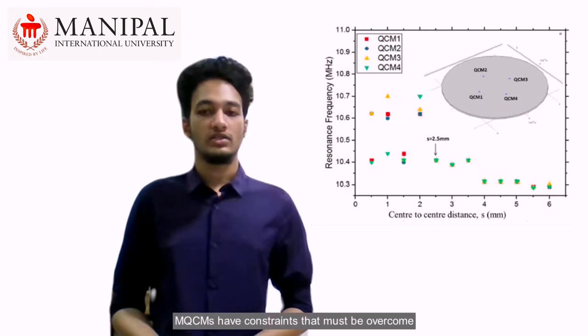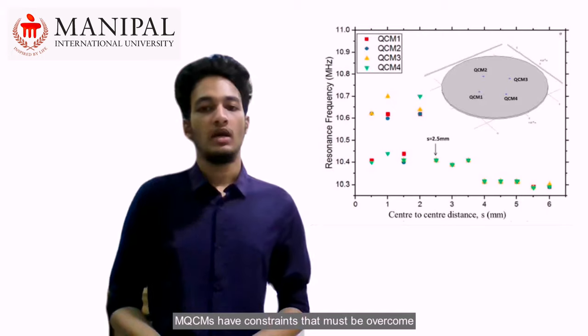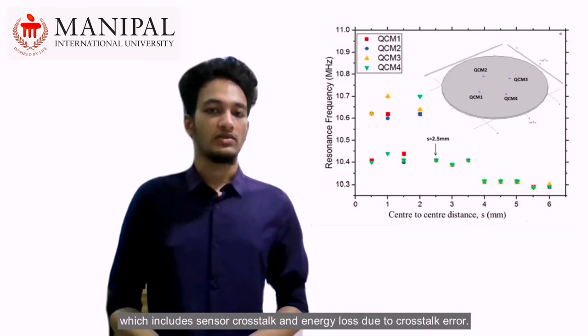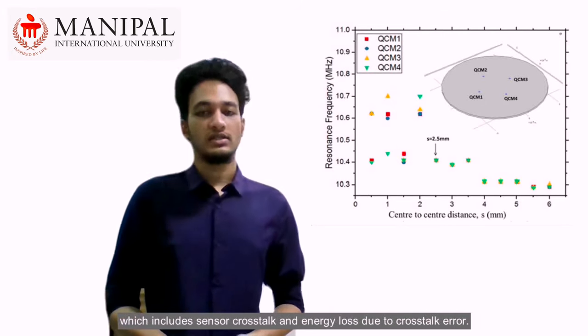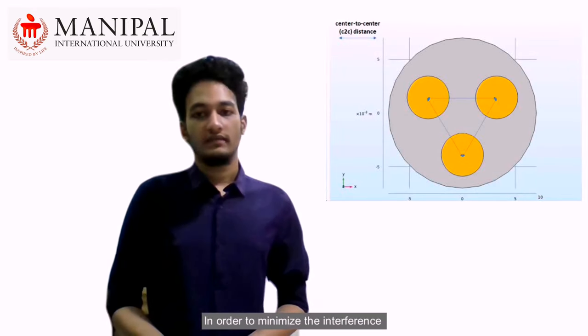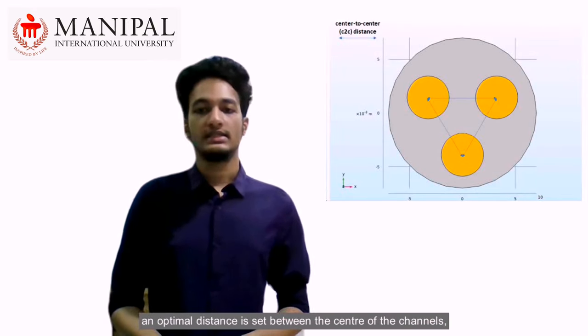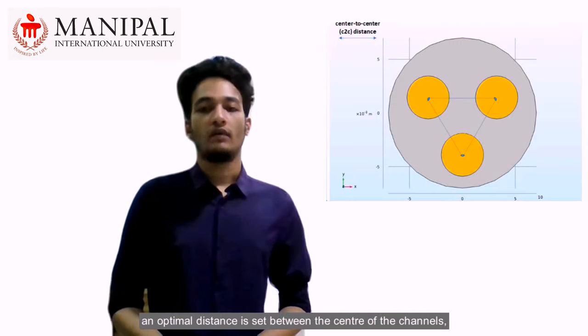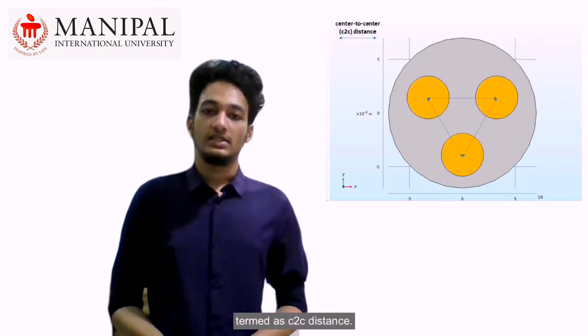MQCMs have constraints that must be overcome, which includes sensor crosstalk and energy loss due to crosstalk error. In order to minimize the interference, an optimal distance is set between the center of the channels, termed as C2C distance.